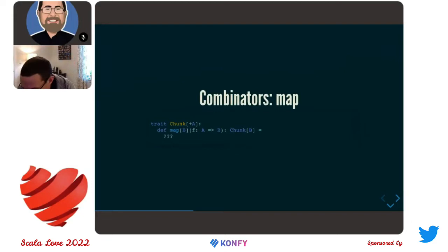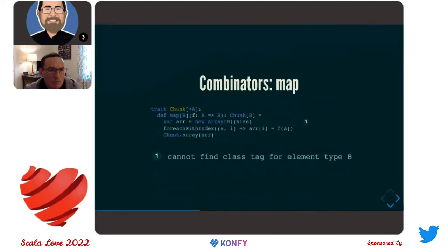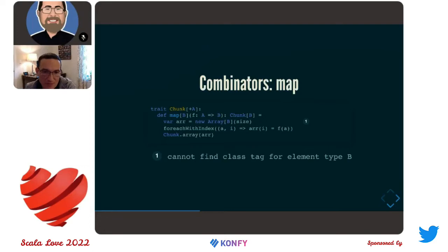How about `map` — a functional programmer's favorite combinator? How might we implement map on the Chunk trait? As a first attempt: create a new array of type B, allocate it to the size of the current chunk (because map won't alter the structure), then use `forEachWithIndex` to assign the result of applying each element to that function. Now we have a populated array; we can just wrap it in the `chunk.array` constructor and we have a Chunk of B. Unfortunately, this doesn't work.